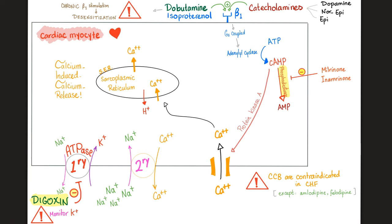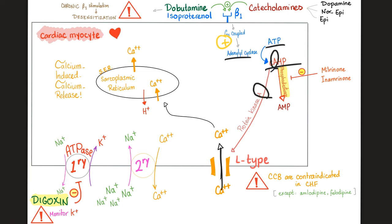This is your cardiac myocyte. How do you increase contraction? You increase contraction through calcium — calcium-induced calcium release. Calcium plus actin and myosin equals contraction. Calcium comes from the calcium channel in the heart. Who stimulates this channel? Cyclic AMP through protein kinase A. So to increase cardiac myocyte contractility, you stimulate beta-1 (Gs-coupled), which stimulates adenylate cyclase, ATP becomes cyclic AMP, protein kinase A opens the calcium channel, calcium-induced calcium release — hashtag contractility.